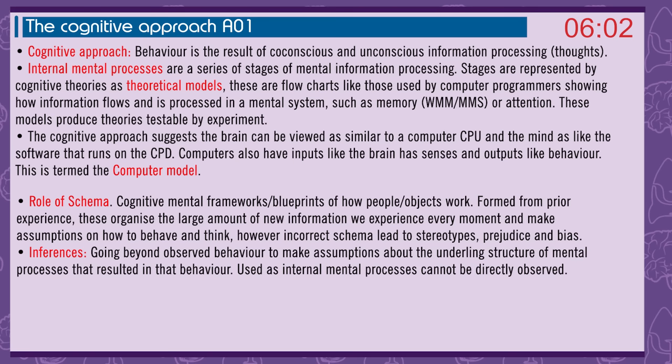The role of schema: cognitive mental frameworks or blueprints of how people and objects work, formed from prior experience. These organise large amounts of information and allow us to make assumptions on how to behave and think. However, incorrect schemas can lead to stereotypes, prejudice, and bias. Inferences: going beyond the observed behaviour to make assumptions about the underlying structure of mental processes — but internal mental processes can't be directly observed.